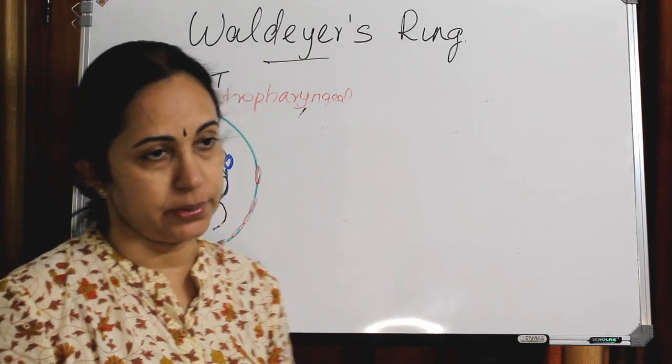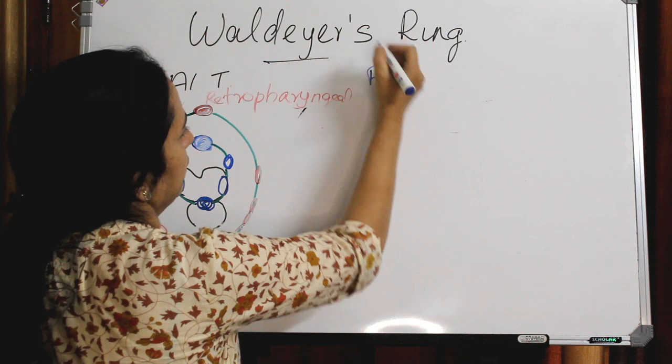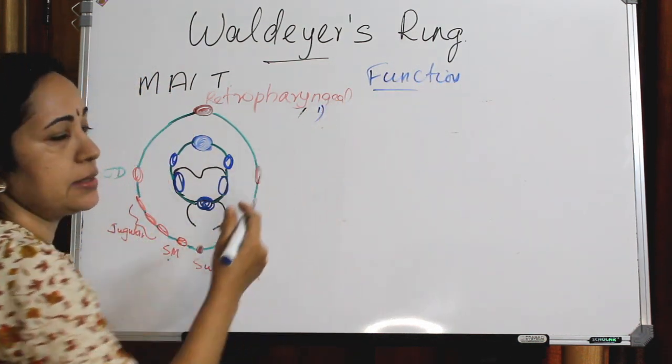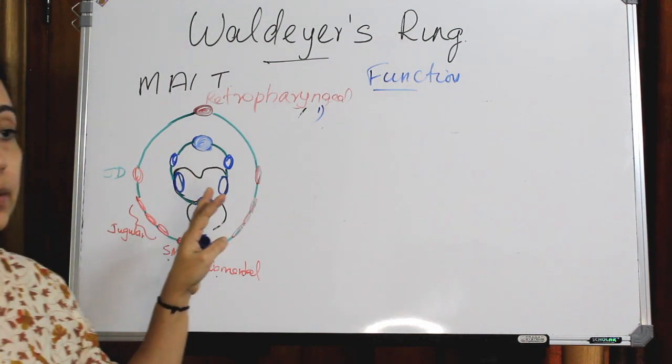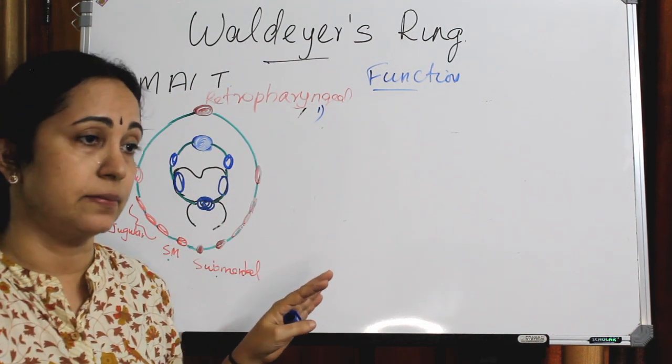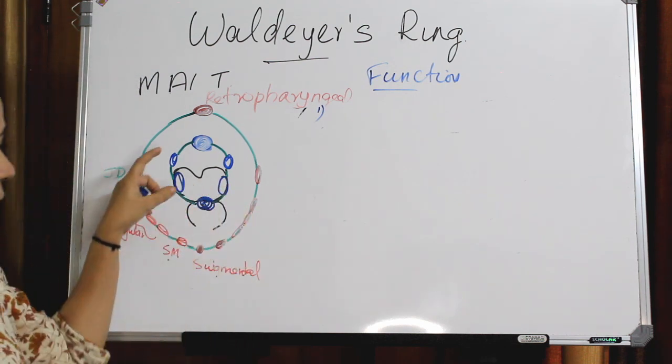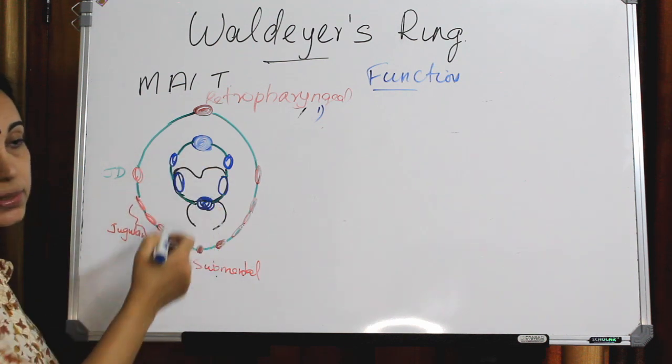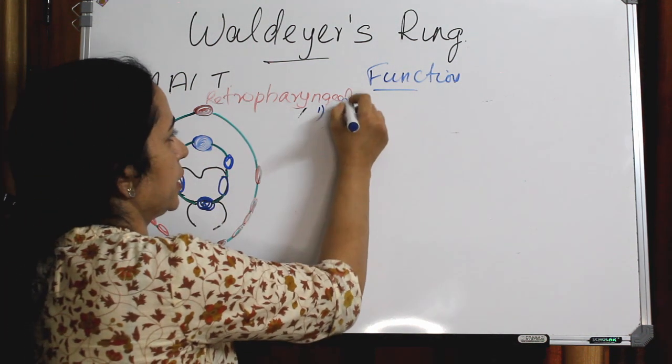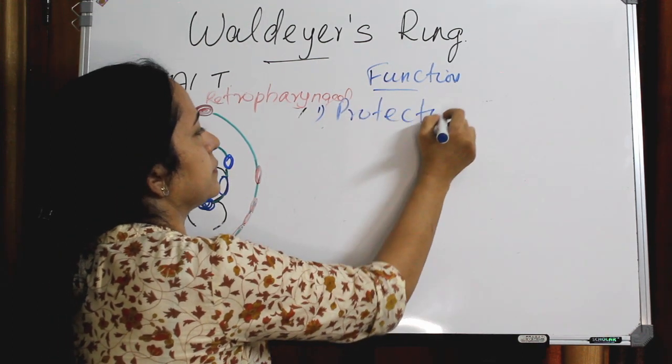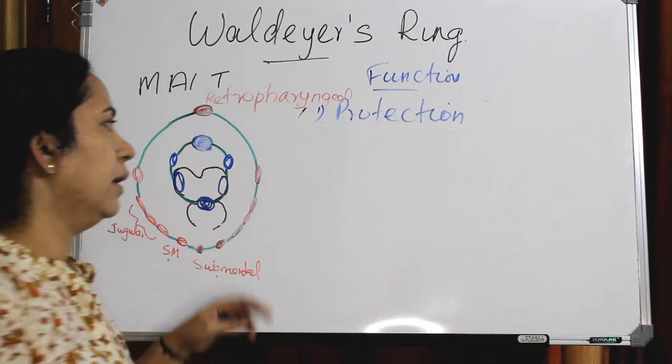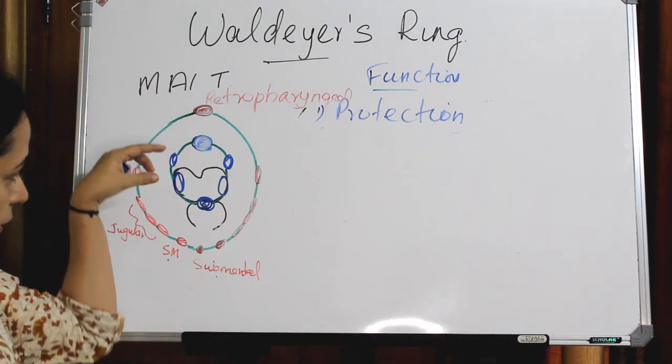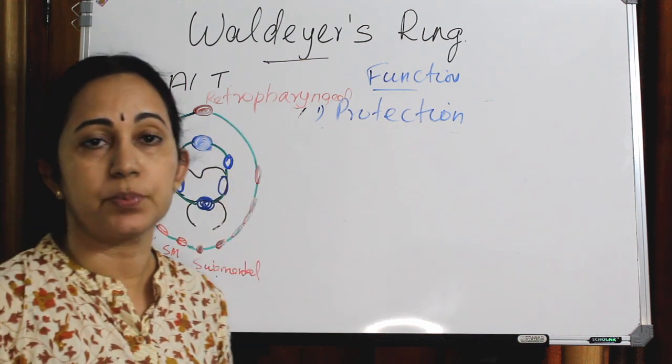Now what are the functions of this? That is also important. What is the use of this Waldeyer's ring? As you know, one thing is that this acts like our security guards. So they protect the lower respiratory as well as digestive tract. So protection, that is one thing. Because no exogenous aggressors or intruders can pass without bypassing them. So that is one role, protection.